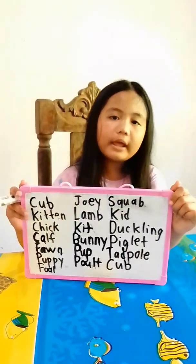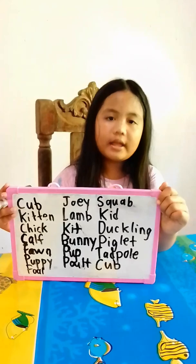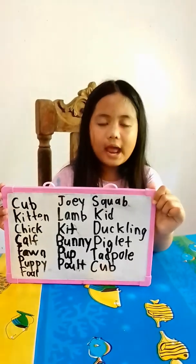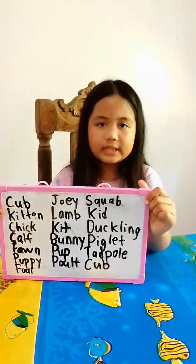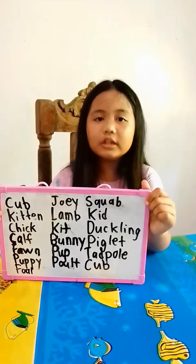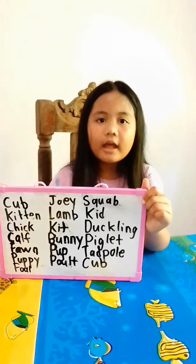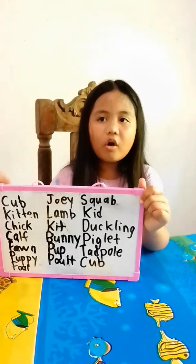What is the baby of an elephant? The baby of an elephant is a calf, also like a rhino.